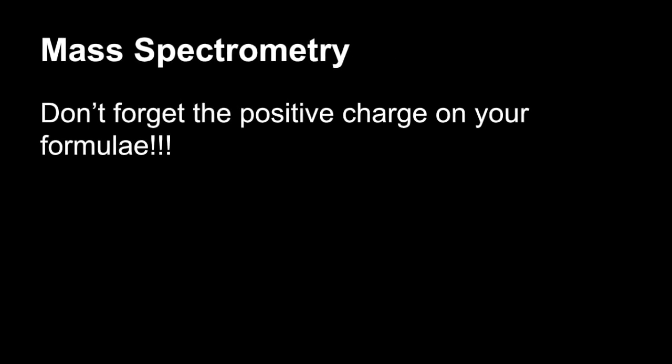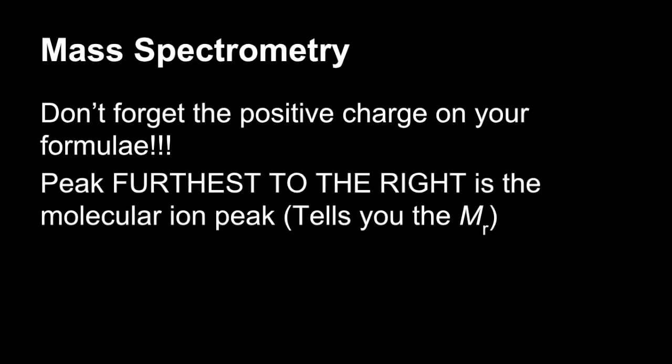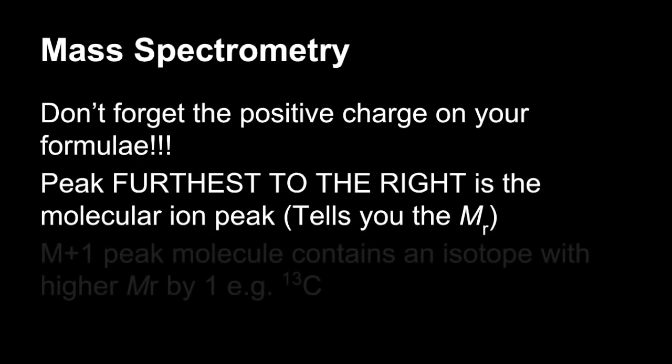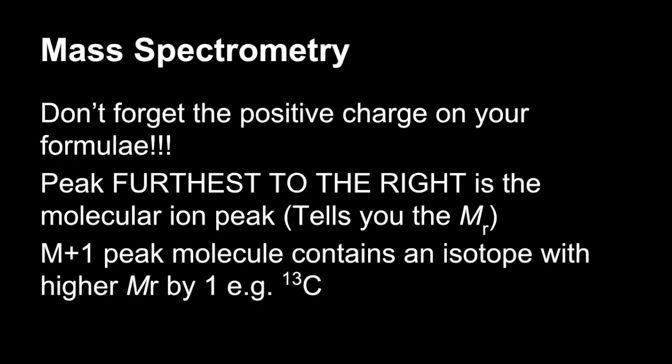Mass spectrometry now. Don't forget the positive charge on your formulae. That's the most common mistake I see. People write in the correct structure, but they forget the positive charge. The peak furthest to the right is the molecular ion peak. That tells you the MR of your original molecule before it starts to fragment. Sometimes you see a tiny little peak just to the right of your molecular ion peak. That's called the M+1 peak. That's due to the fact that your molecule may have an atom of carbon-13 in, for example, so its mass is heavier by 1.